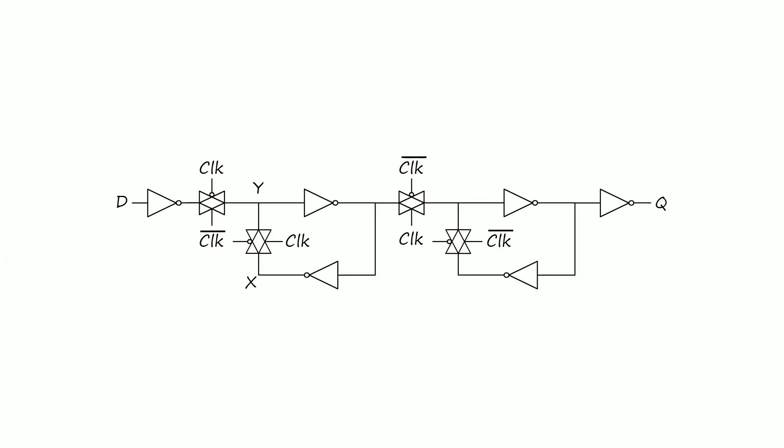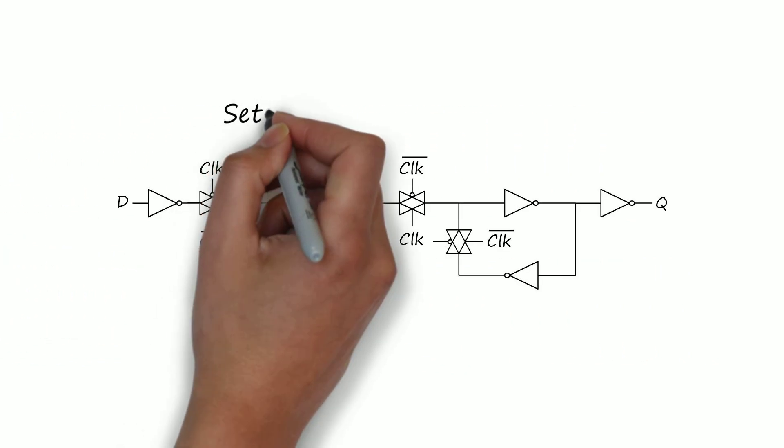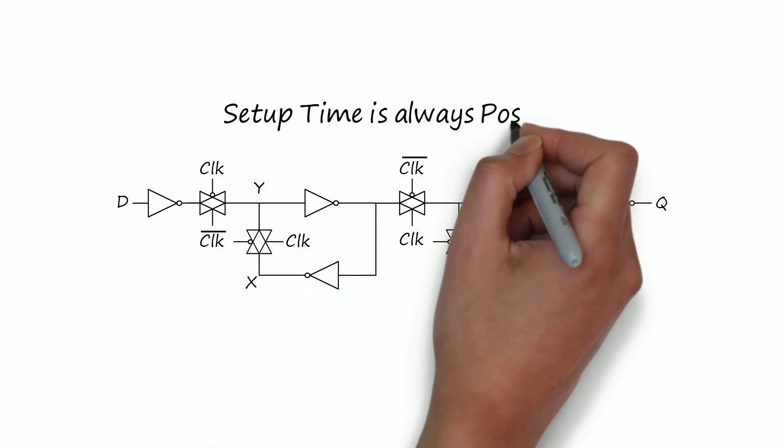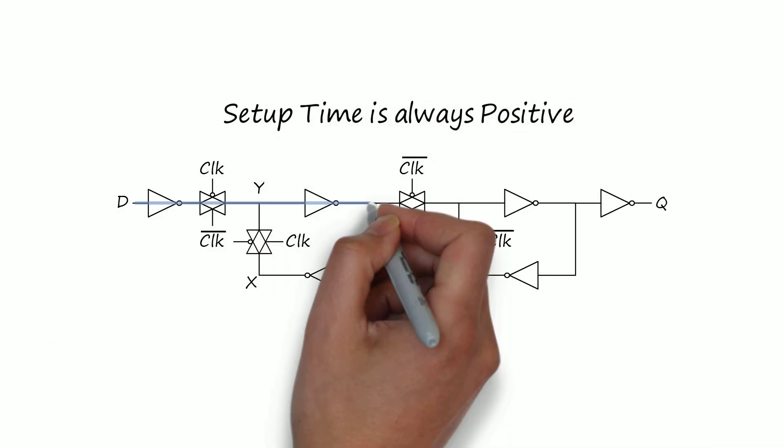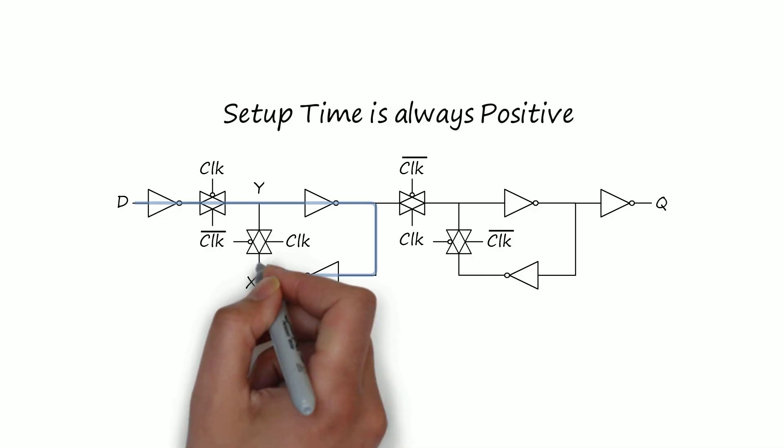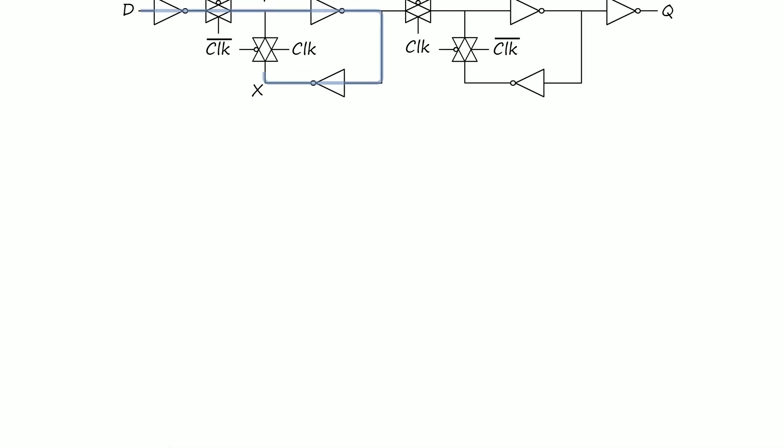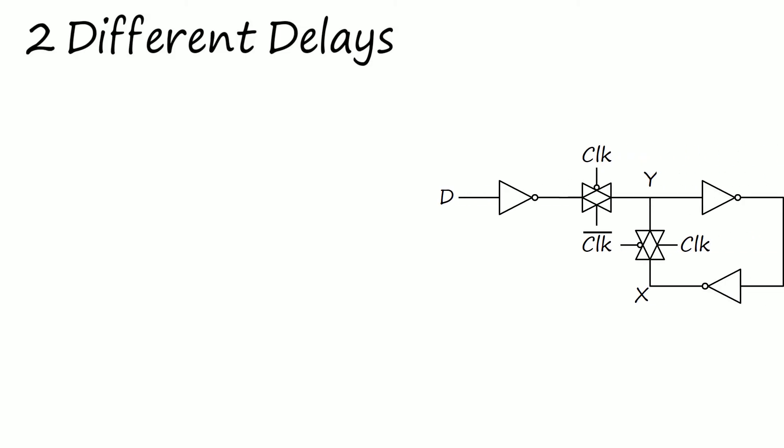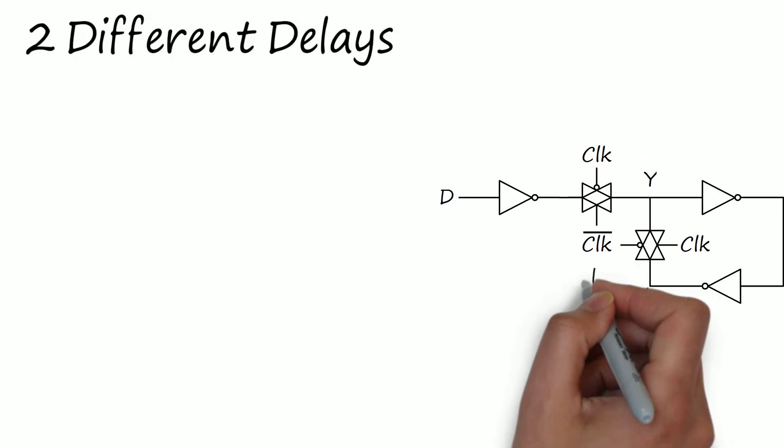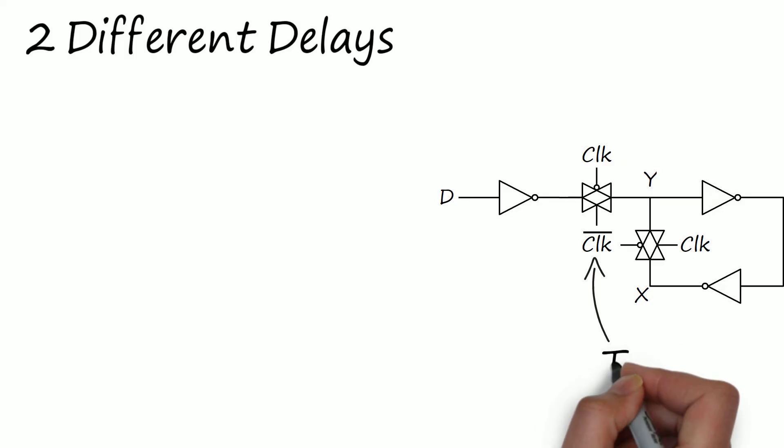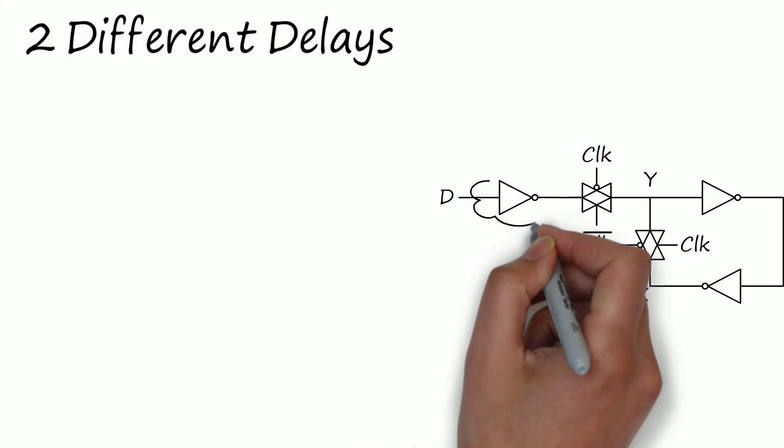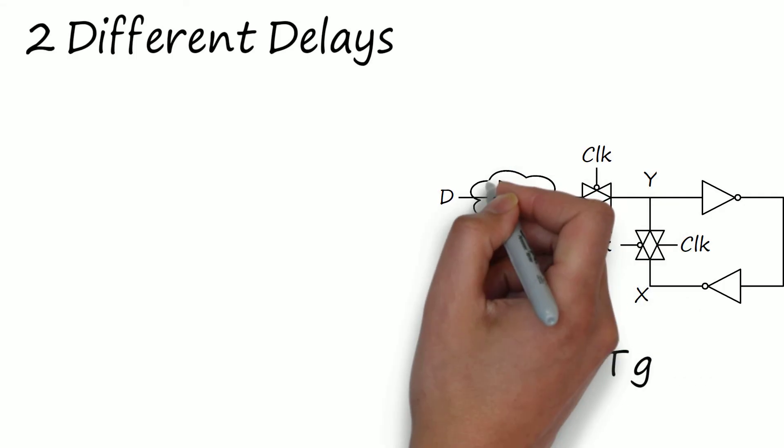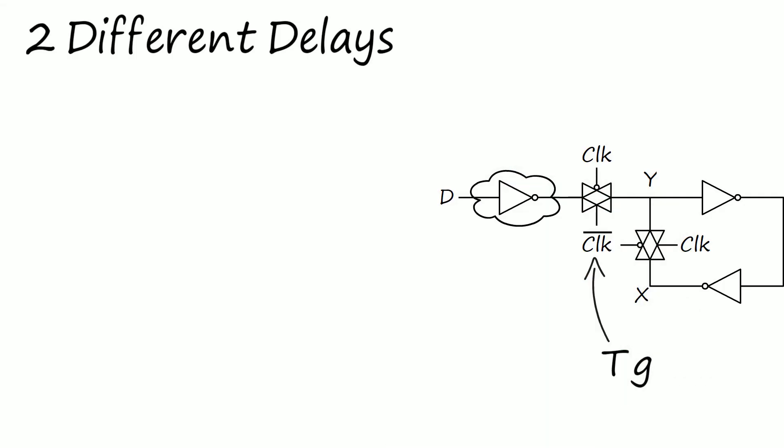This is the internal structure of a flip flop. Setup time is no doubt always positive since it is simply the delay from the D input to the node X. However, for hold time we have to consider two different delays. First is the time that the transmission gate takes to turn off after the clock's active edge arrives. Let us denote this by TG. Second is the combinational logic delay in the data path between the input and this transmission gate. Let us denote this by TIN.